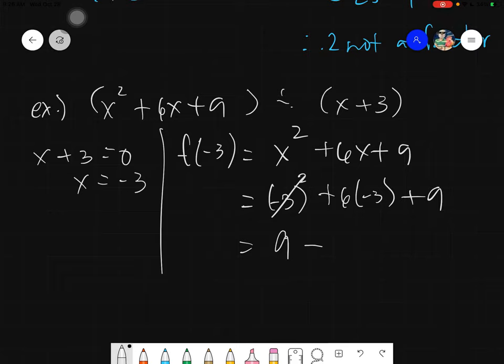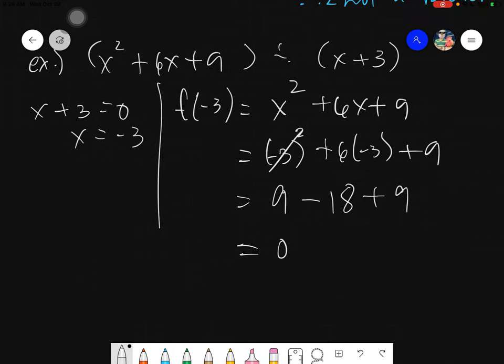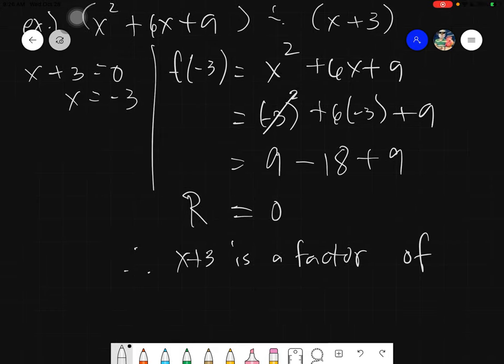And negative 3 squared, the answer is 9, minus 6 times 3 is 18, plus 9. And 9 minus 18 plus 9, the answer is 0. If the remainder is 0, then we can assume that therefore x plus 3 is a factor of our given which is x squared plus 6x plus 9.